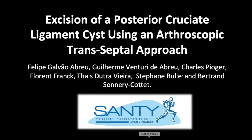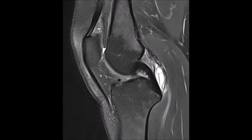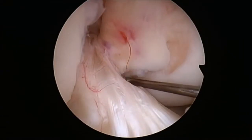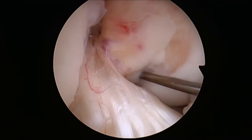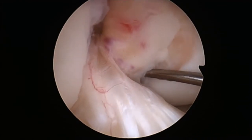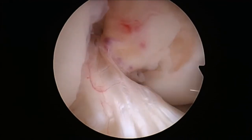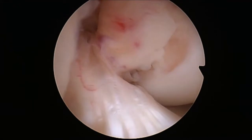PCL cyst resection through transeptal approach. The MRI image identifies a symptomatic ganglion cyst located behind the PCL. The goal of this technique is to remove the cyst safely under direct visualization.